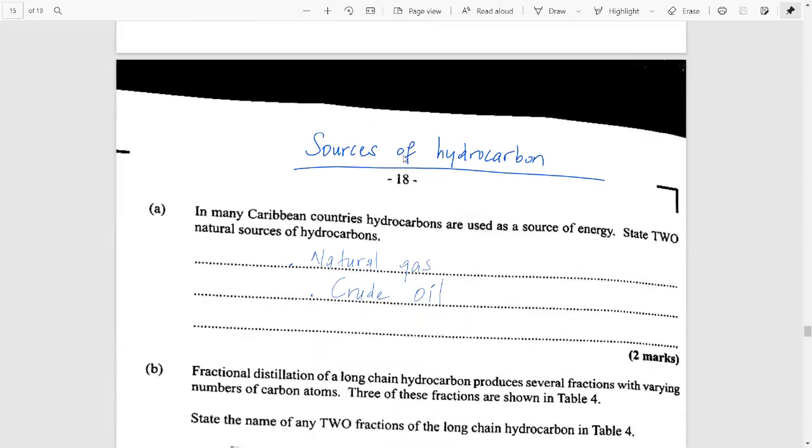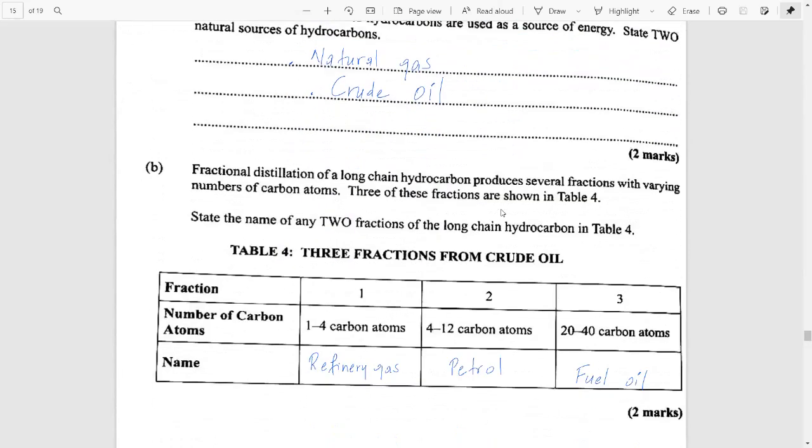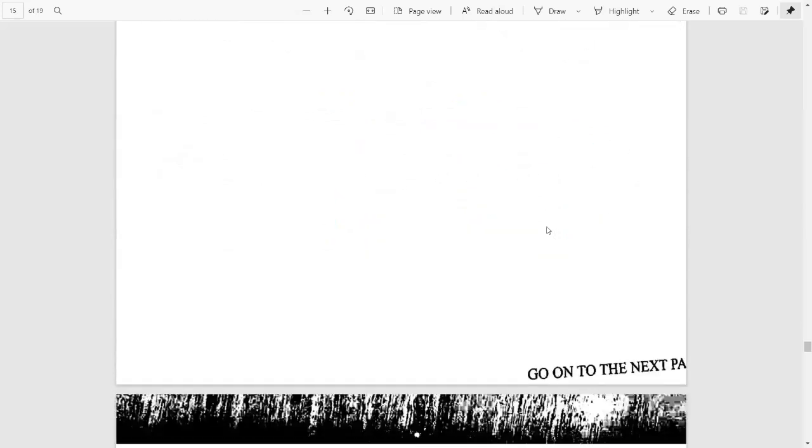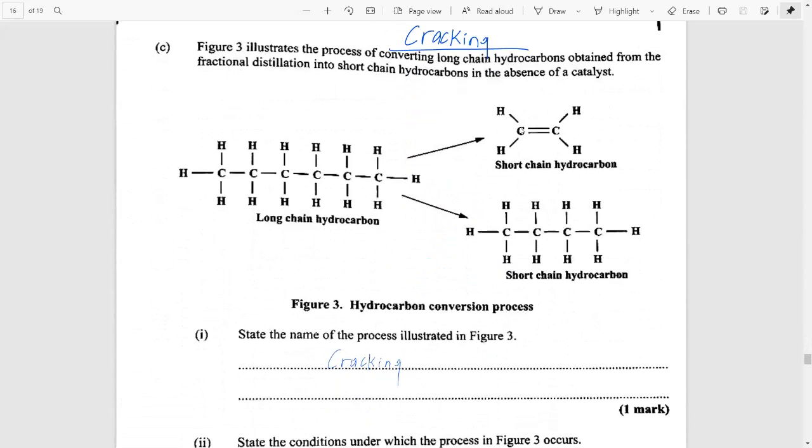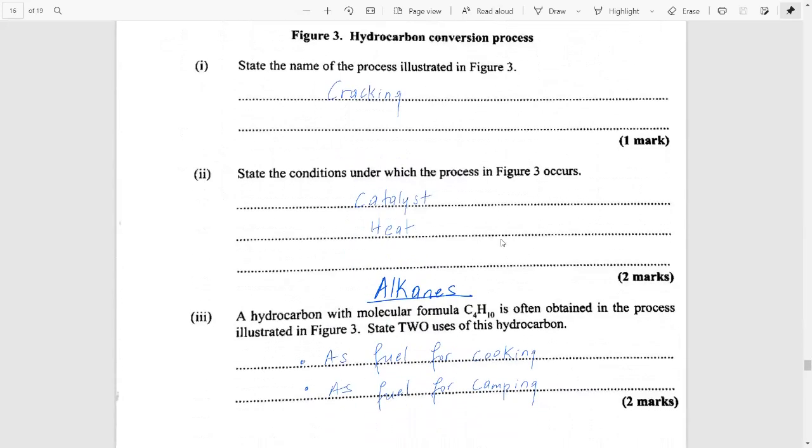You had more questions on organic chemistry. The sources of hydrocarbons being natural gas and crude oil. And you were asked to identify the fractions from the fractional distillation of crude oil based on the number of carbons they contain. I hope you were able to give any two that were correct. You also had a question on cracking. So, we did speak about cracking in our marathons when you have a long-chain hydrocarbon being converted into an alkene and an alkane. And for cracking, you do need a catalyst and heat.